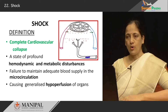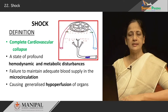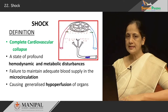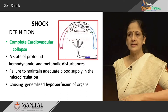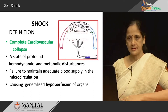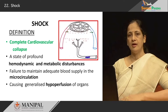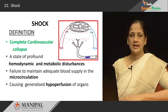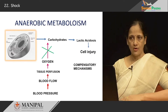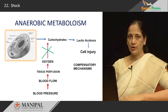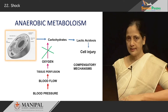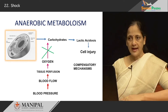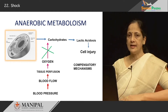If this oxygen supply is not there, the initial aerobic metabolism will transform into anaerobic metabolism, wherein carbohydrates are converted to lactic acid. This results in acidosis with a drop in pH at the cellular level, and cell injury results. In shock, there is complete cardiovascular collapse, meaning blood supply to each and every organ and tissue is affected, causing a state of profound hemodynamic and metabolic disturbances characterized by failure to maintain adequate blood supply to the microcirculation, causing generalized hypoperfusion of the organs. If blood flow is absent, lactic acidosis results and cell injury occurs.